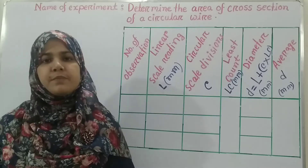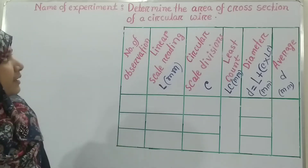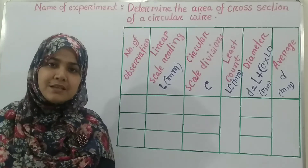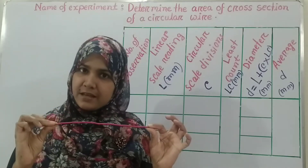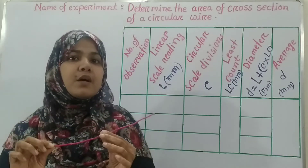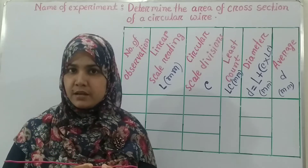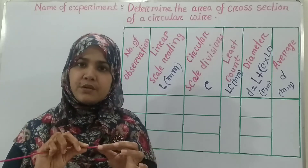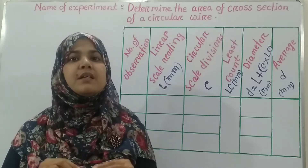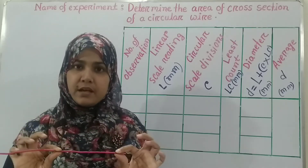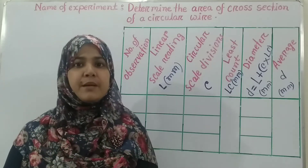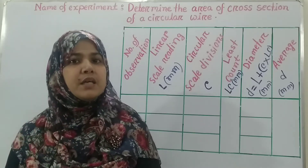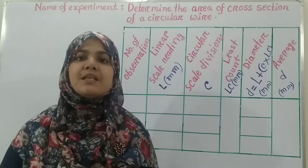The name of our today's experiment is: determine the area of cross-section of a circular wire. Here you can see there's a wire in my hand and I am going to measure the cross-section of this circular wire. But before that we need to measure the diameter of that wire. To measure the diameter of a wire we need an instrument, and the name of that instrument is screw gauge.